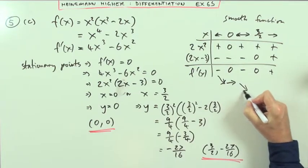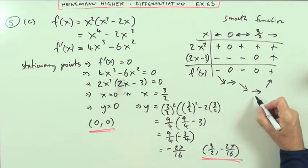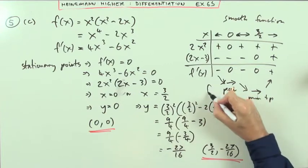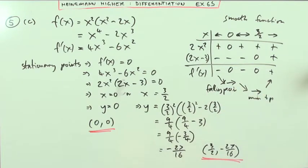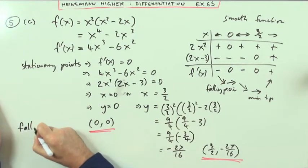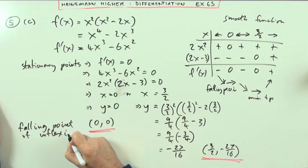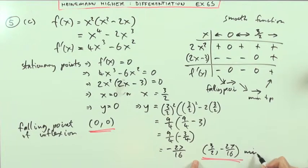So it's going down, along, down again, along and up. So I've got a minimum turning point here. And that's a point of inflection. We say P-O-I. And in particular, it's a falling one. A falling point of inflection. So the stationary points would be a falling point of inflection at 0, 0, and a minimum turning point at 3 upon 2, negative 27 upon 16. A falling point of inflection. And that is a minimum turning point. There it is, 5c.